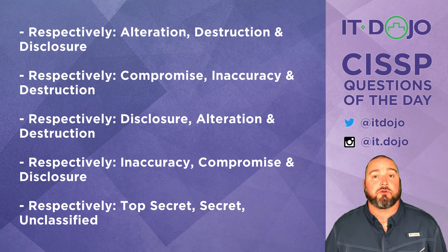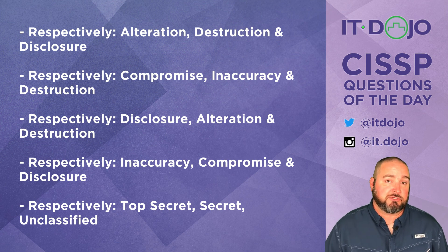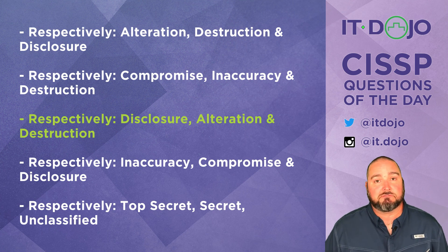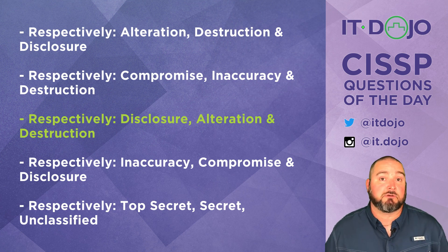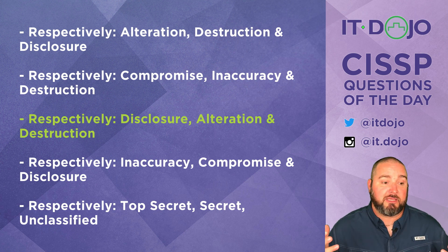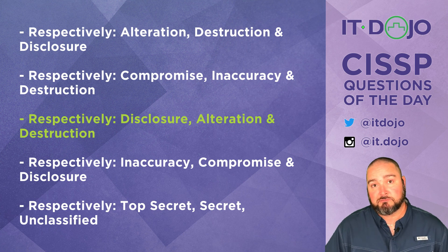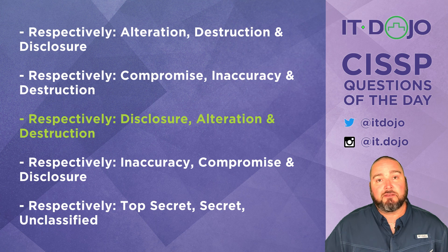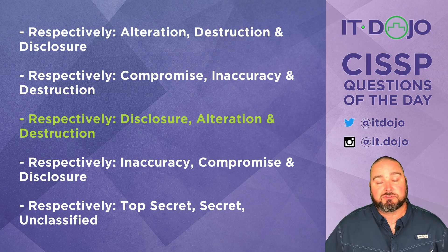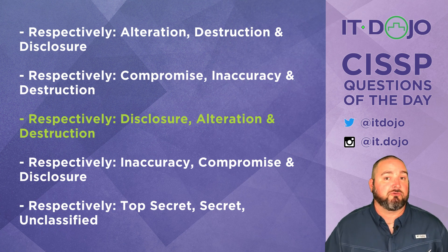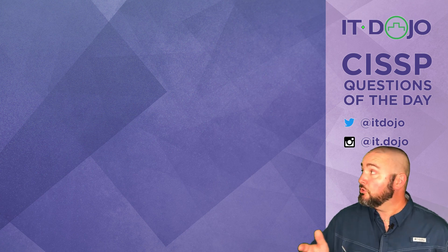The correct answer is disclosure, alteration, and destruction. Confidentiality's opposite is disclosure — confidentiality is about keeping things secret, and disclosure means that secret information has been revealed to an unauthorized party. Integrity is about detecting unauthorized modifications to data, so its opposite is alteration — specifically unauthorized alteration. Availability means your data exists and you can access it, so destruction — data being removed or destroyed — is the opposite of availability.